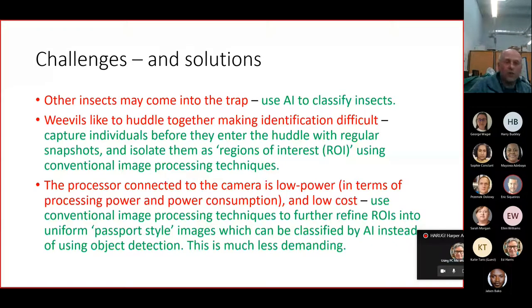So to summarize the challenges and solutions that we're going to try and solve, it might not just be weevils that come in looking for darkness. So we don't want to be counting them, assuming that they're weevils when they're not. So we're going to use AI to classify them. Weevils, as you'll see in upcoming photographs, like to huddle together. That makes it a very difficult task actually for identification. Sheep tend to do the same thing. So we solved that by taking a picture every 10 minutes and concentrating on things that have moved. And so, isolating single insects in that way.